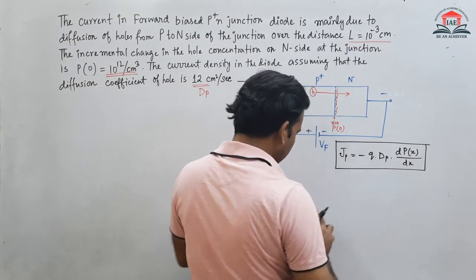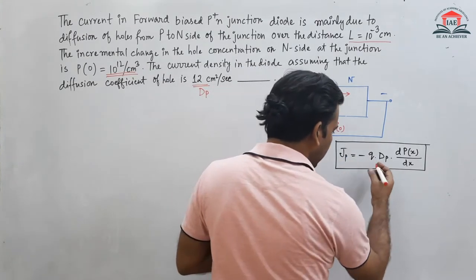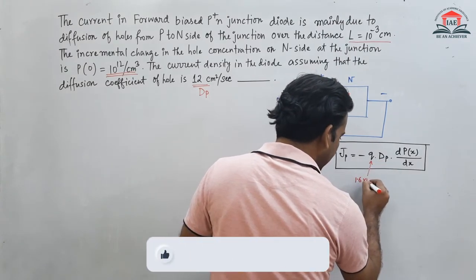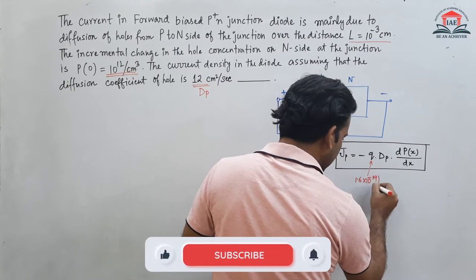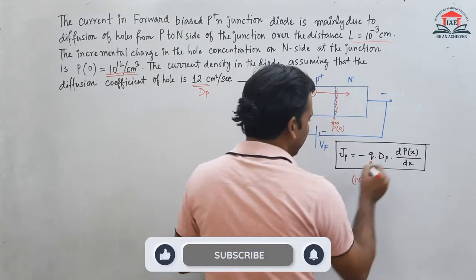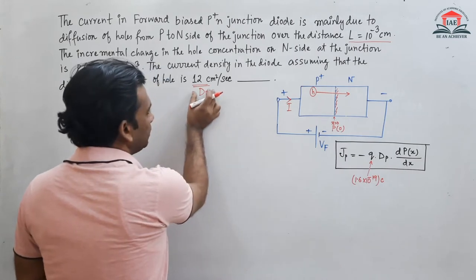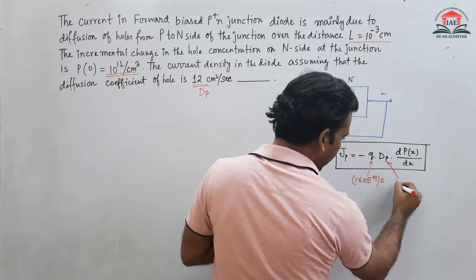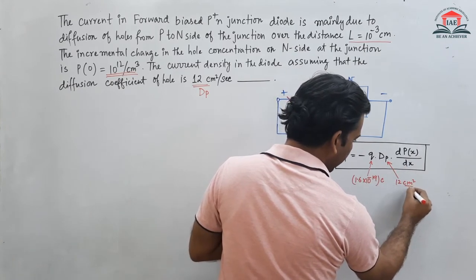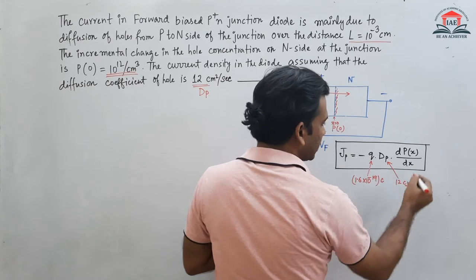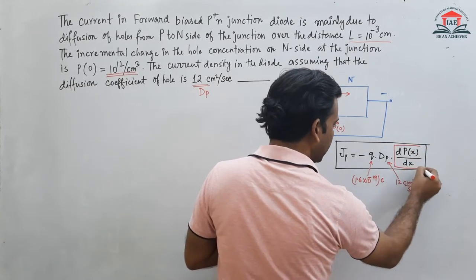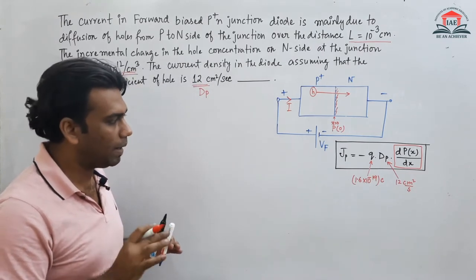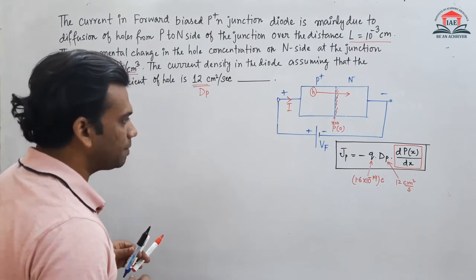We have the value of q = 1.6 × 10^-19 coulomb, and Dp = 12 cm²/s is also given. Now we need to find the concentration gradient dP/dx.